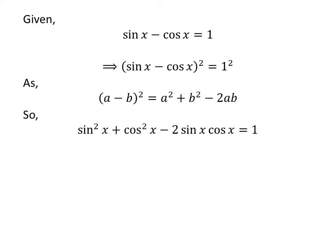Application of the above formula gives us: square of sin of x plus square of cosine of x minus 2 times sin of x times cosine of x is equal to 1. We know the famous trigonometry identity: square of sin of x plus square of cosine of x is equal to 1.